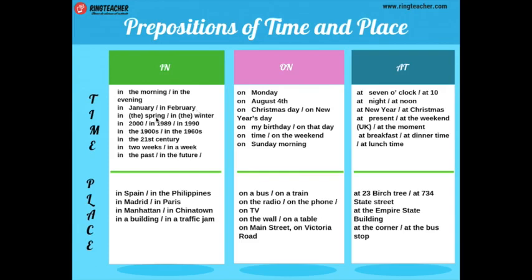También pueden usarlo con estaciones del año: in the spring, in the winter — en la primavera o en el invierno. También pueden usarlo para años específicos: in 1989, in 1980. Entonces pueden usarlo con los años.